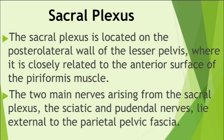The sacral plexus is located on the posterolateral wall of the lesser pelvis, where it is closely related to the anterior surface of the piriformis muscle. The two main nerves arising from the sacral plexus are the sciatic nerve and the pudendal nerve. They lie external to the parietal pelvic fascia. Most branches of the sacral plexus leave the pelvis through the greater sciatic foramen.